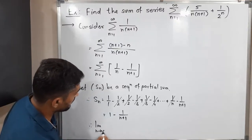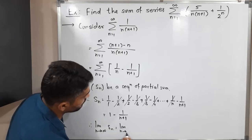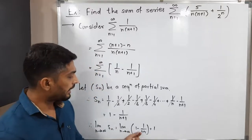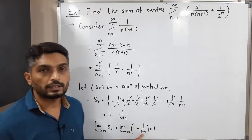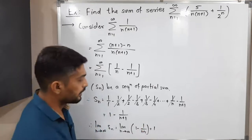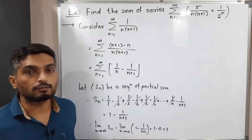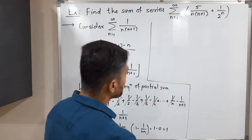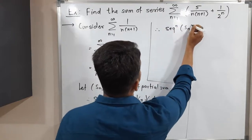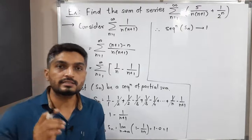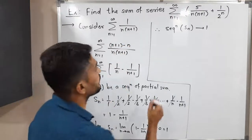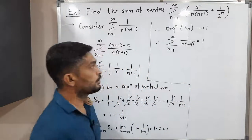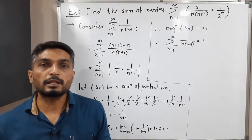Now applying the limit as n tends to infinity to both sides: the limit of S_N equals the limit of [1 minus 1/(n+1)]. The 1 is a constant so it stays, and 1/(n+1) goes to 0 as n goes to infinity since 1/infinity = 0. So we have 1 minus 0, which is 1. This means the sequence of partial sums S_N is convergent and converges to 1. Therefore the corresponding series summation 1/(n(n+1)) is also convergent and converges to 1, so the sum of this series is 1.